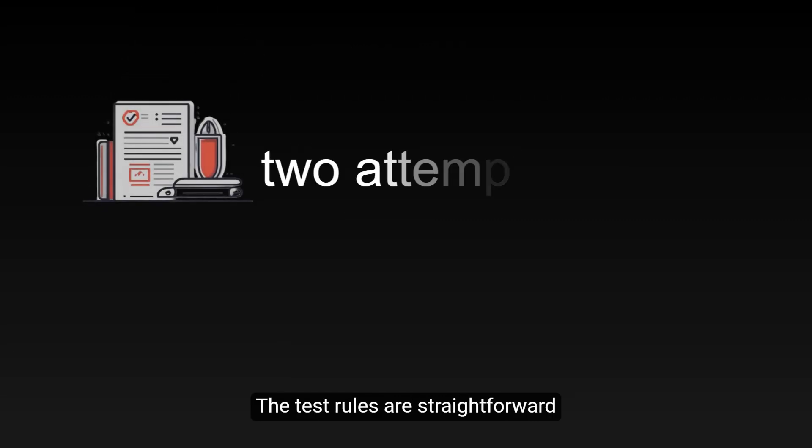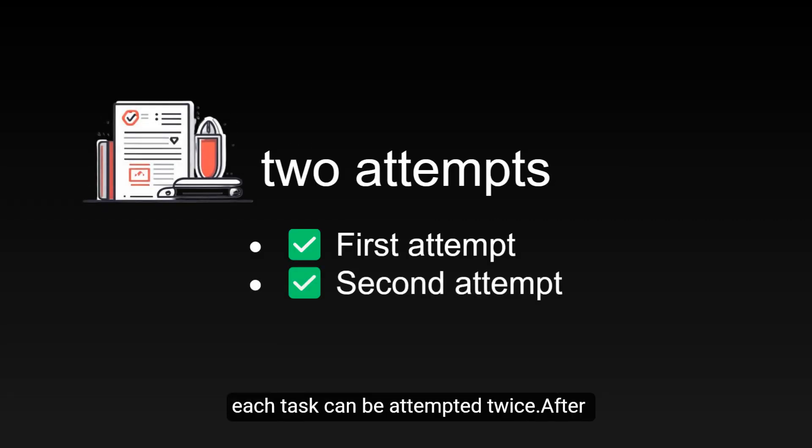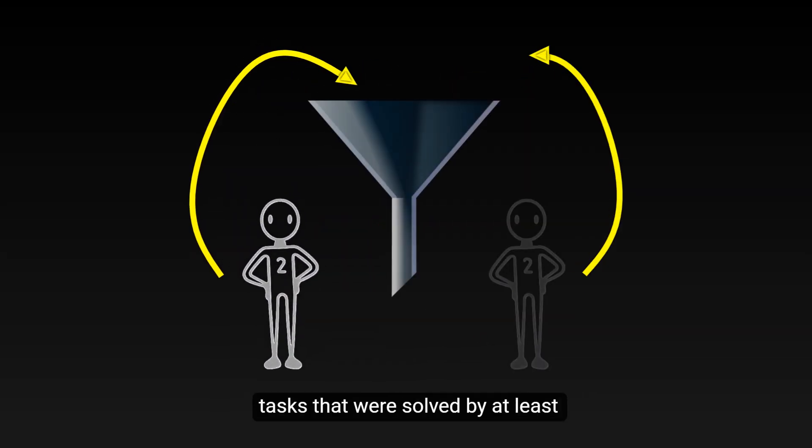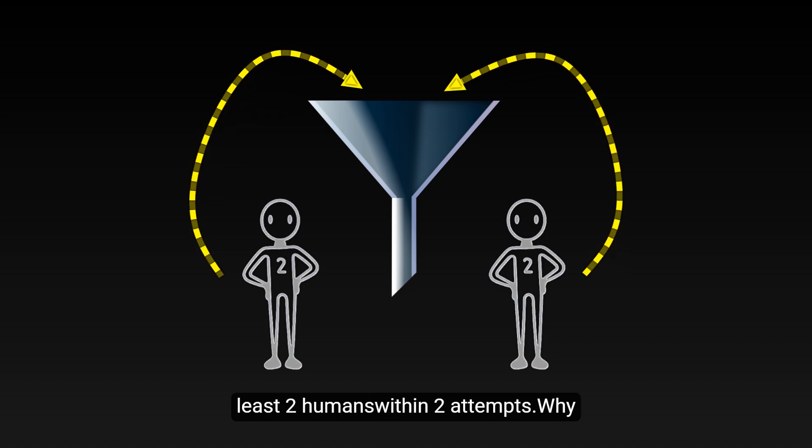The test rules are straightforward. Each task can be attempted twice. After more than 400 human participants took part in the test, the researchers filtered out those tests that were solved by at least two humans within two attempts.